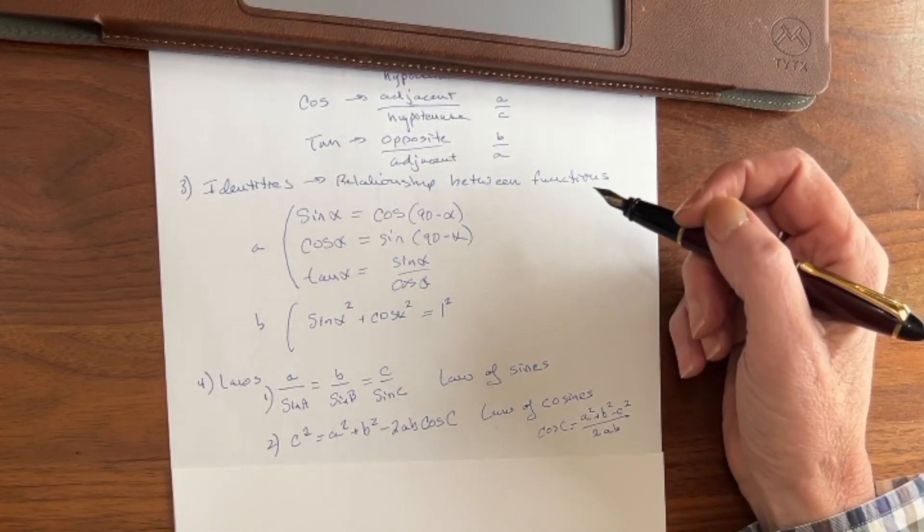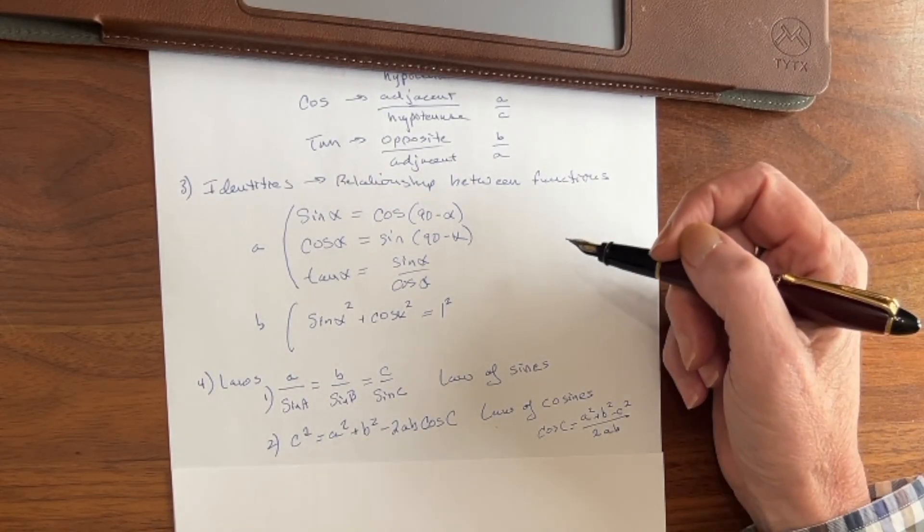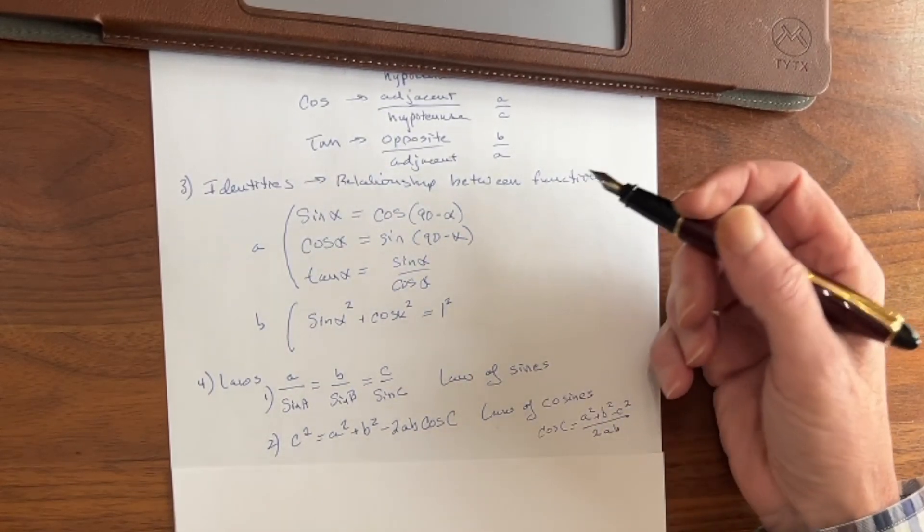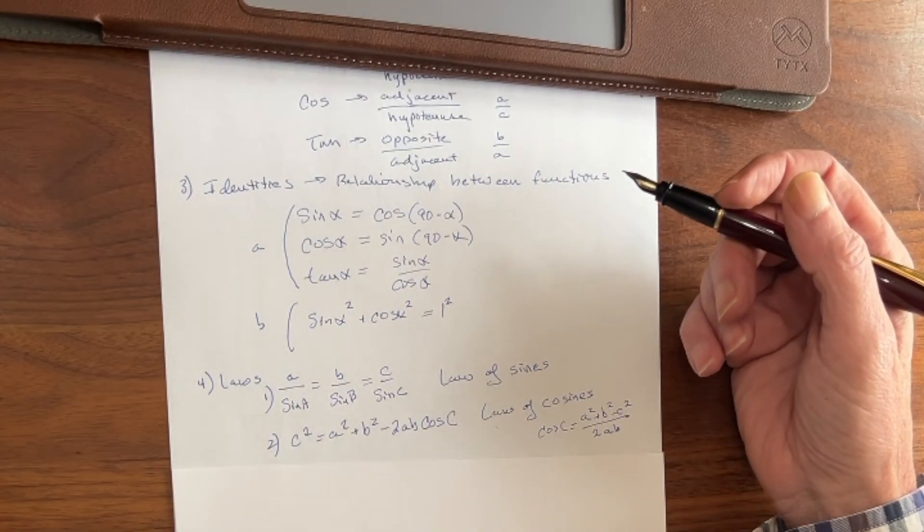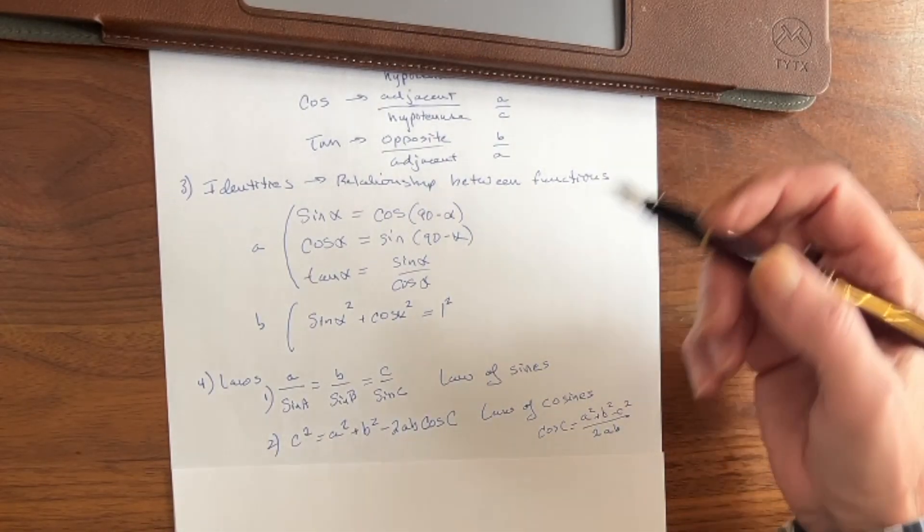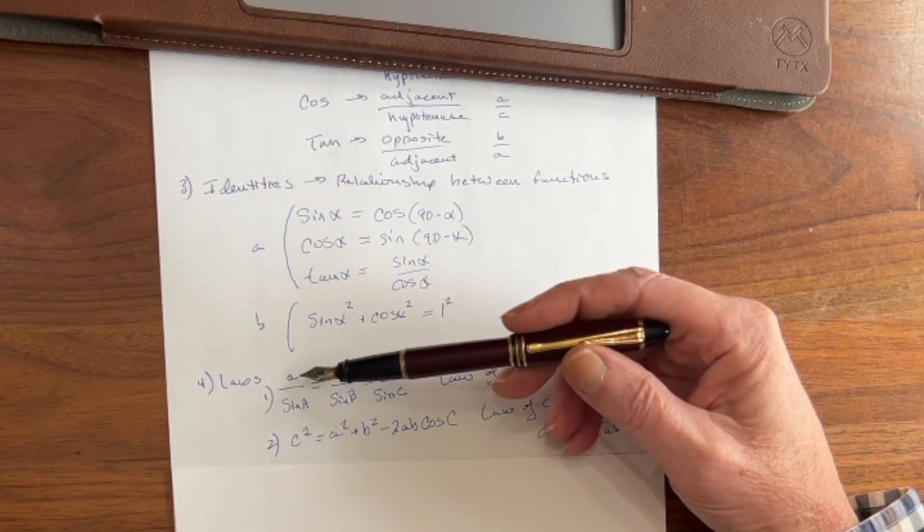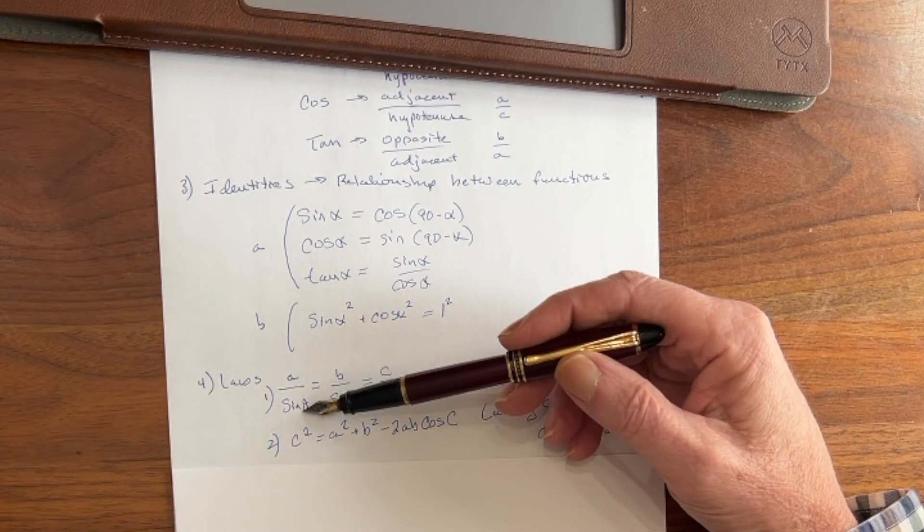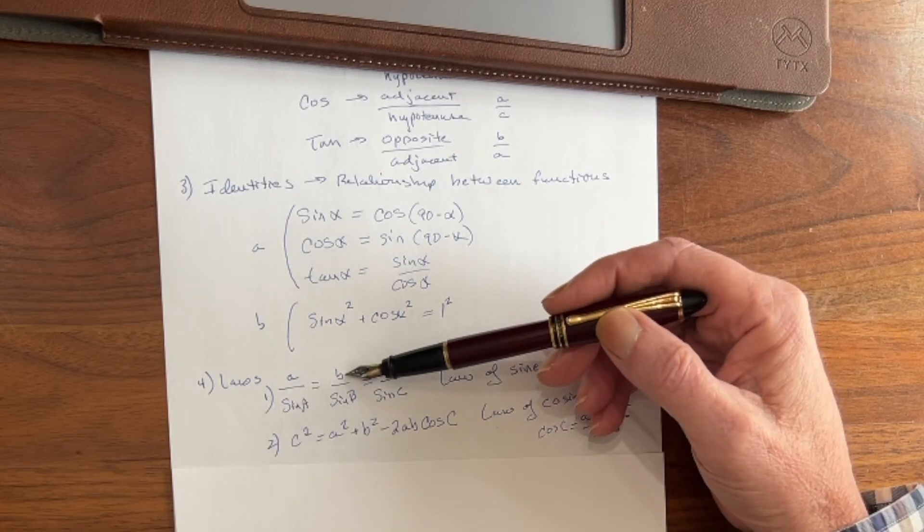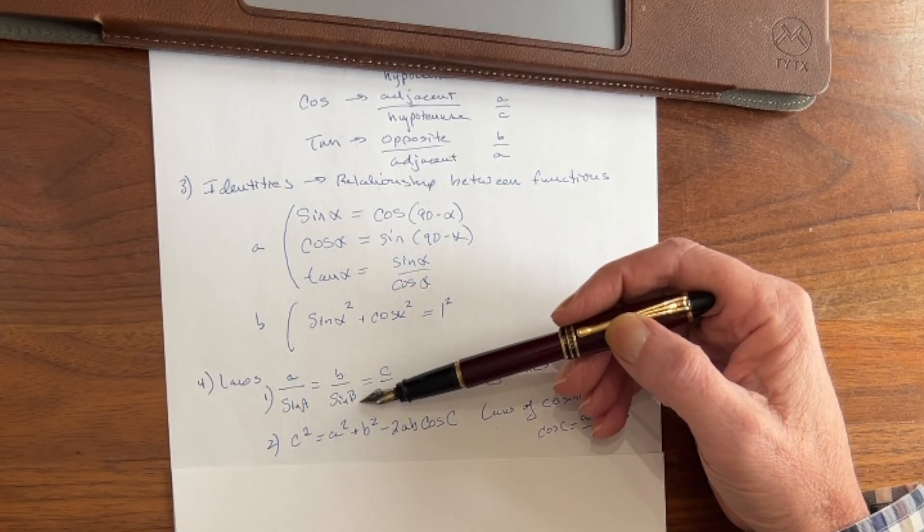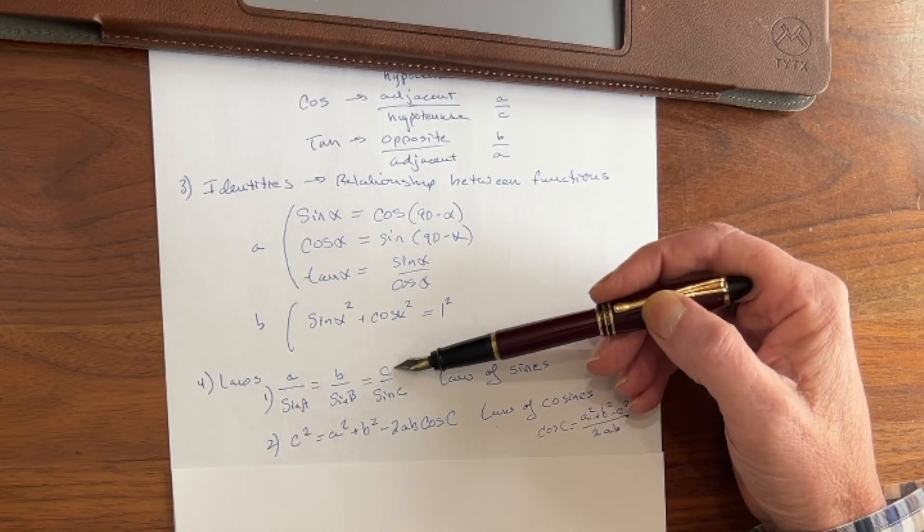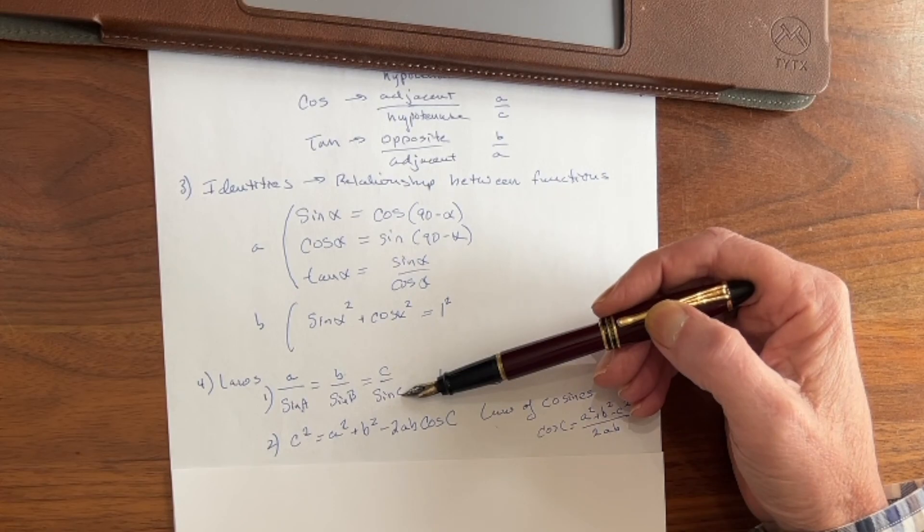Next we have the laws, and the laws are formulas to help you find the sides or the angles of a triangle. If you know some of them, it'll help you find the other ones. The first one is the law of sines, and that is that side a over the sine of angle a equals side b over the sine of angle b equals the side c over the sine of angle c.